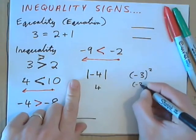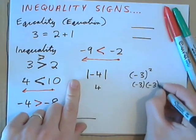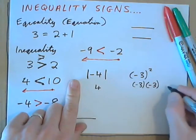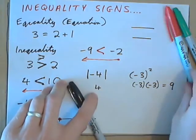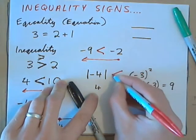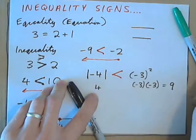Negative 3 all squared is negative 3 times negative 3. Negative times negative, positive, positive 9. So, this is 4. This is 9. And 4 is less than 9. So, we put the inequality sign like that.